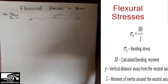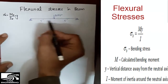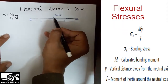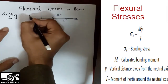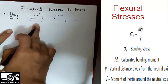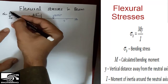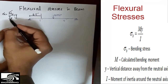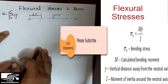Here we have a simply supported beam with a 10 kip load acting at the center point, with 5 foot distance from the left side and 5 foot distance from the right side. We are interested to find the flexural stresses at a point 2.5 foot from the left support. To find those stresses, we need the moment at that point, the moment of inertia of the section, and the Y distance.